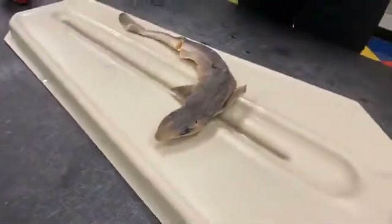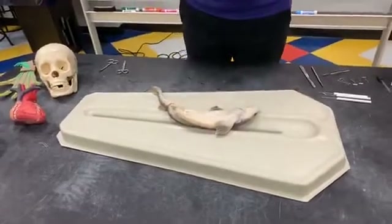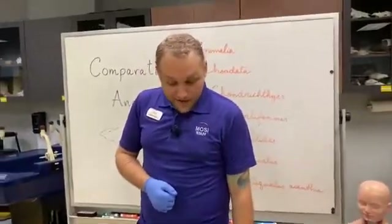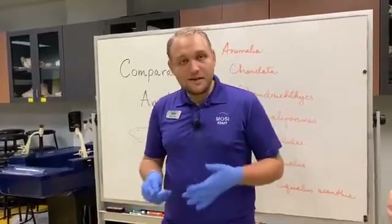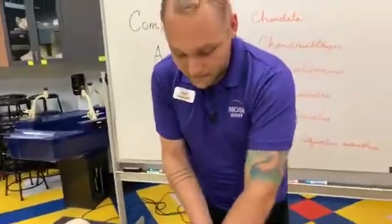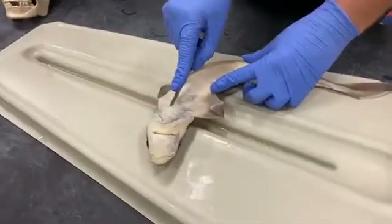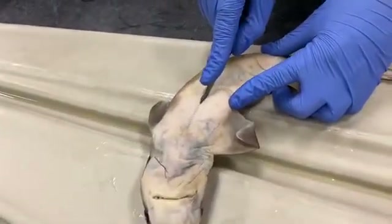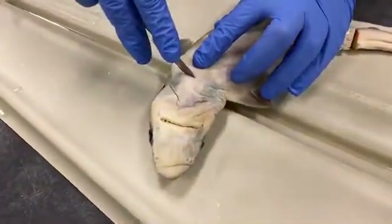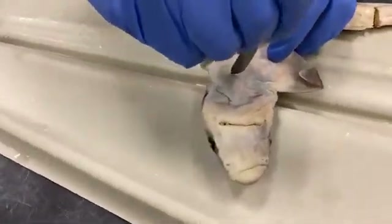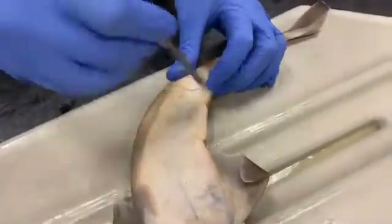Now we're going to get to the dissection. A part most people don't think about is actually looking at the outside first, which we've done. Now we're going to cut into the shark. Sharks have very tough skin because of those dermal denticles — the teeth scales. So it's going to take me a minute to cut in. I have my scalpel here, which is very sharp. I'm going to make guide cuts — not going too deep — just to find where I need to cut into the shark. Then I'll go back in and make deeper cuts to get further inside.